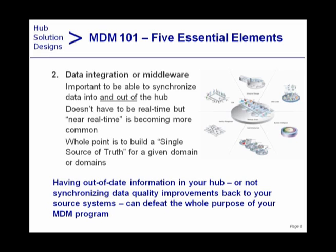Data integration is the second essential element. You must be able to synchronize data into and out of the hub. Near real-time integration is becoming more common — go beyond just batch, though batch is still important. Having out-of-date information in your hub defeats the purpose of your MDM program. One early client was planning only one-way integration into the hub, not back out, across five mainframe-based source systems. I asked if it wasn't more expensive to build a hub and not synchronize data changes back to source systems. You're definitely going to need some data integration or middleware.